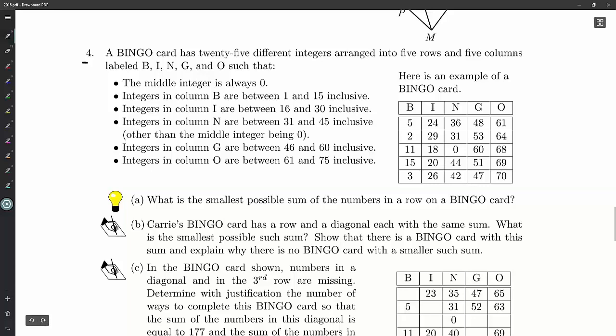Question four: A bingo card has 25 different integers arranged into five rows and five columns labeled B-I-N-G-O. The middle integer is always zero. The integers in column B are between 1 and 15 inclusive. Column I: 16 through 30. Column N: 31 through 45, other than the middle integer which has to be zero. Column G: 46 to 60. Column O: 61 to 75.